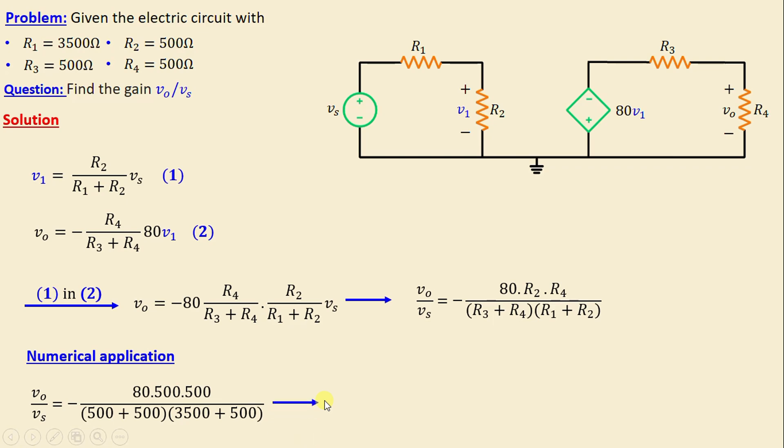Finally, we obtain the gain vo/vs = -5. In order to verify that, we choose